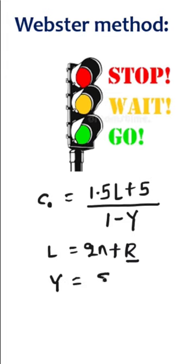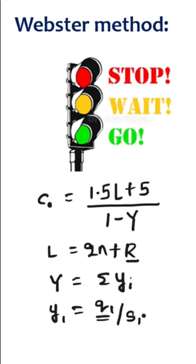It is given by the formula summation of Yi, where Y1 for example is given by the formula Q1 by S1, where Q1 is the normal flow and S1 is the saturation flow.